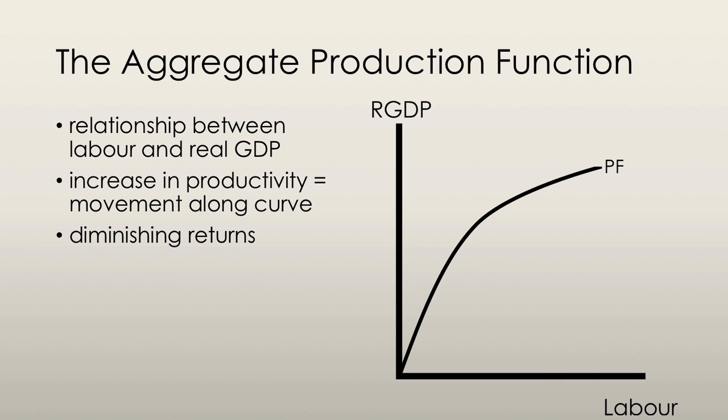The quantity of land, the quantity of entrepreneurial ability, and capital are fixed on any given day, but the quantity of labor employed is actually variable. So potential GDP is the level of real GDP when the quantity of labor employed is at the full employment quantity.